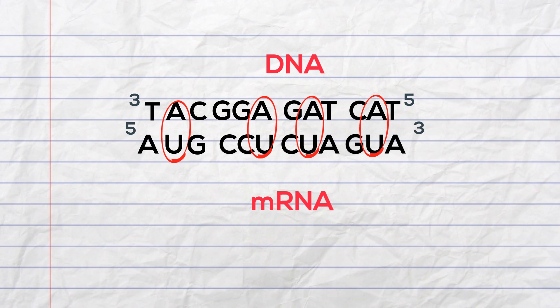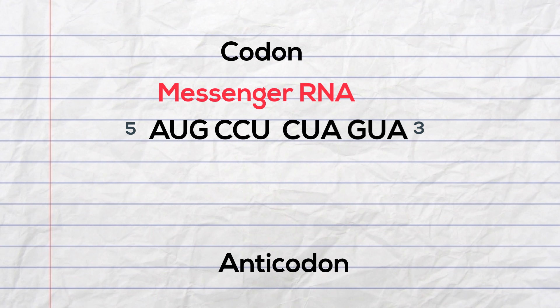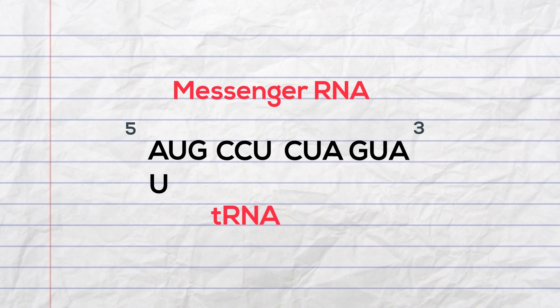Transfer RNA pairs with the messenger RNA. The messenger RNA will be the codon and the transfer RNA will be the anti-codon. The transfer RNA has uracil, therefore A pairs with U, U pairs with A, G with C, and so forth.